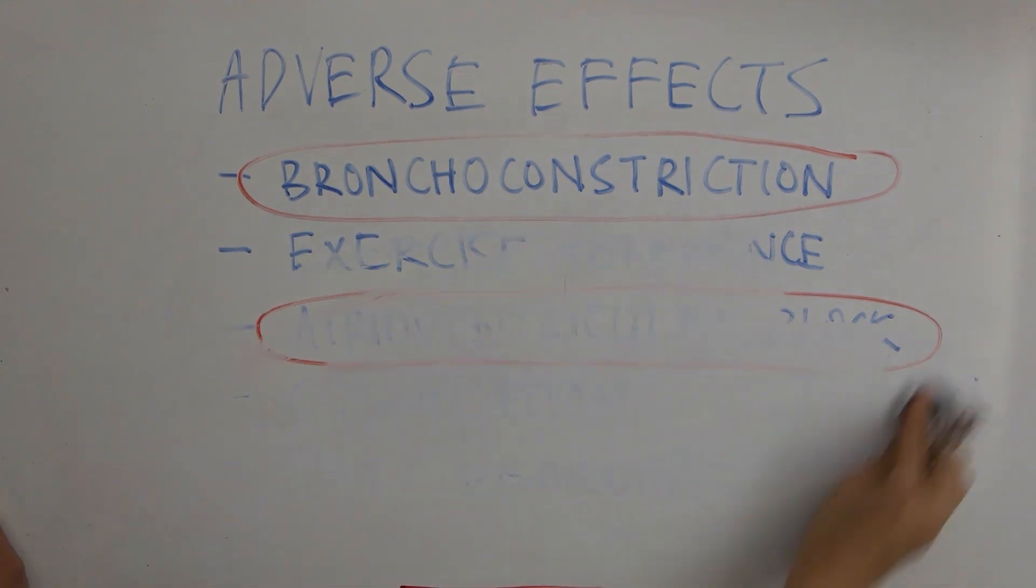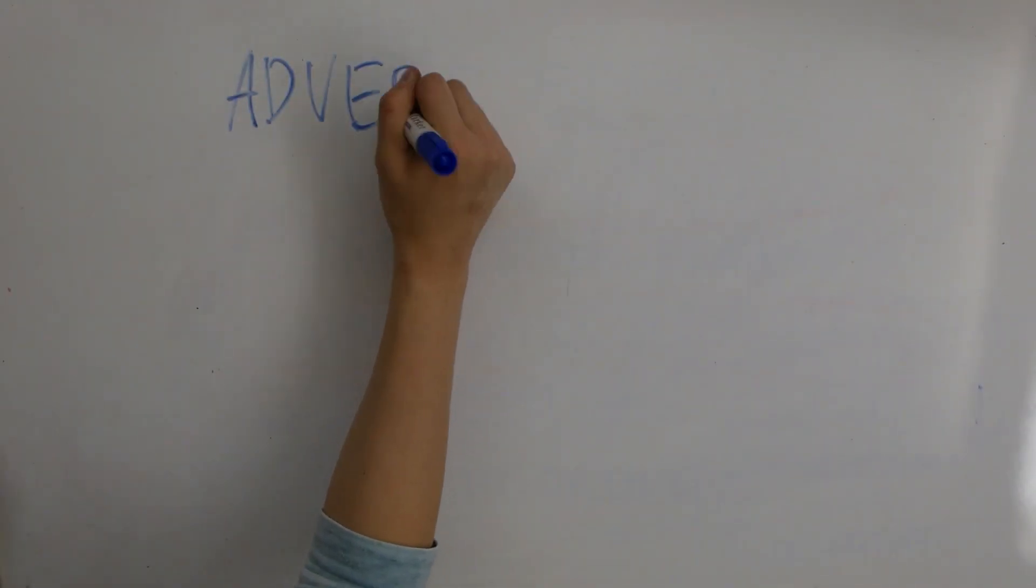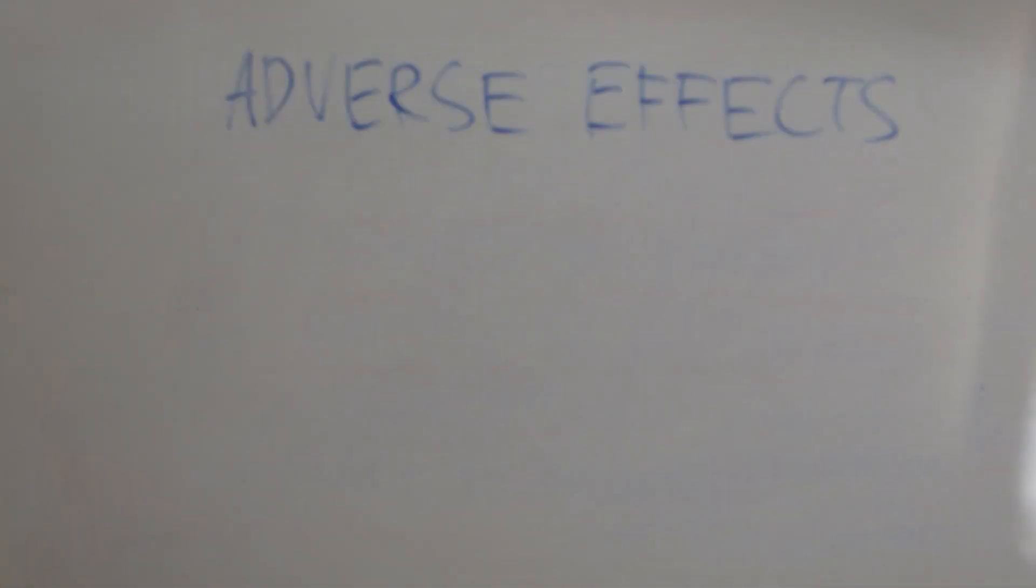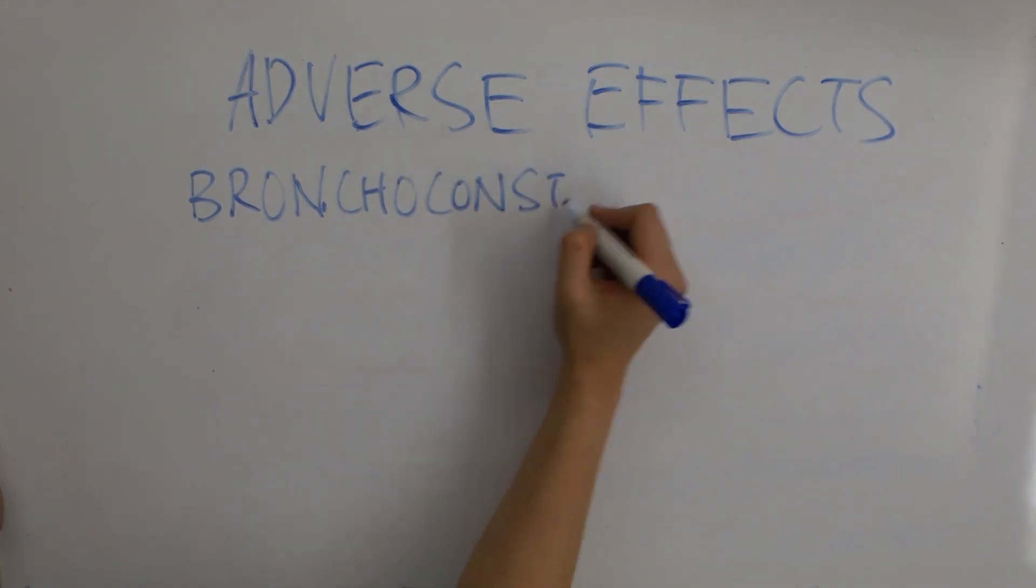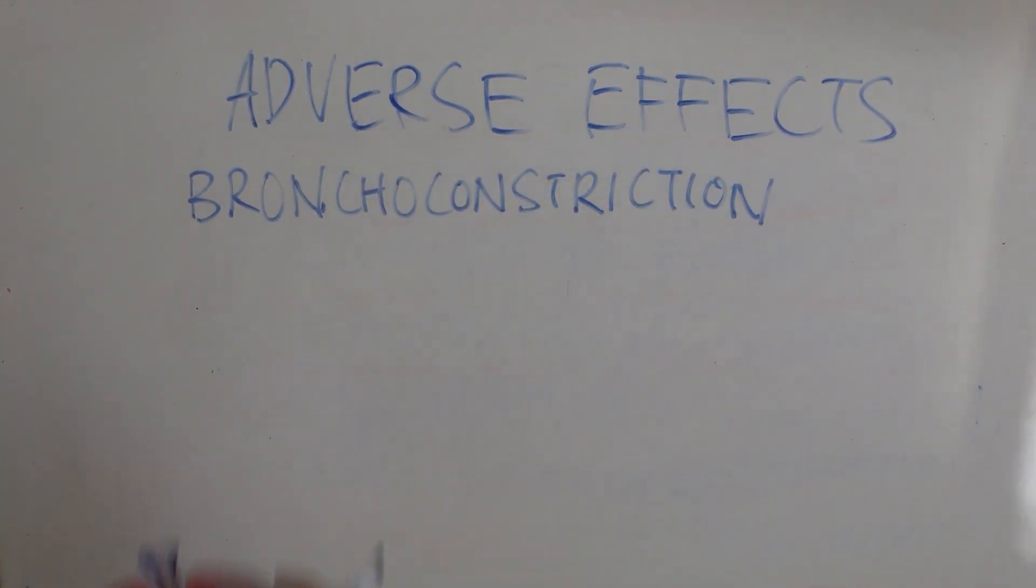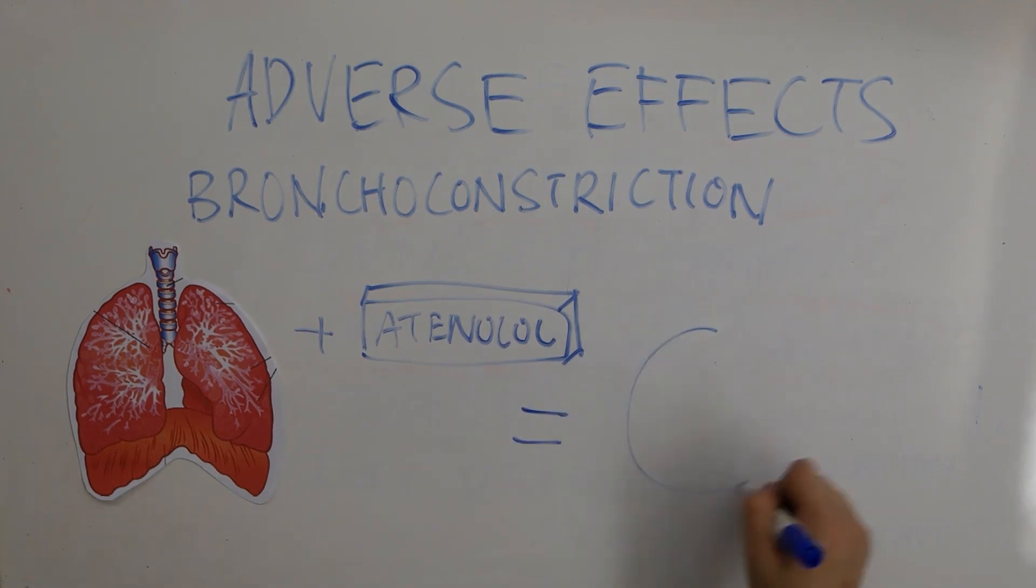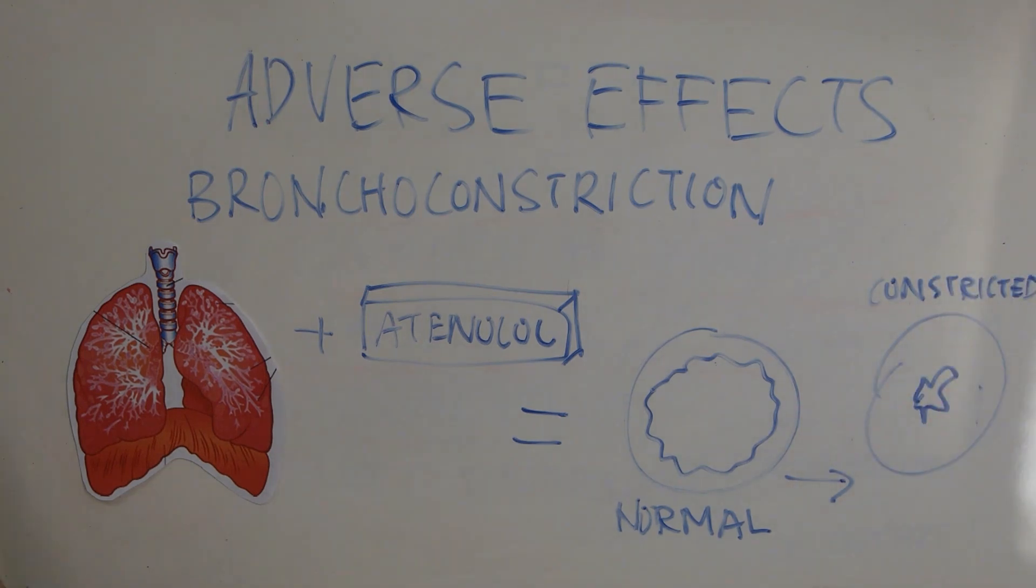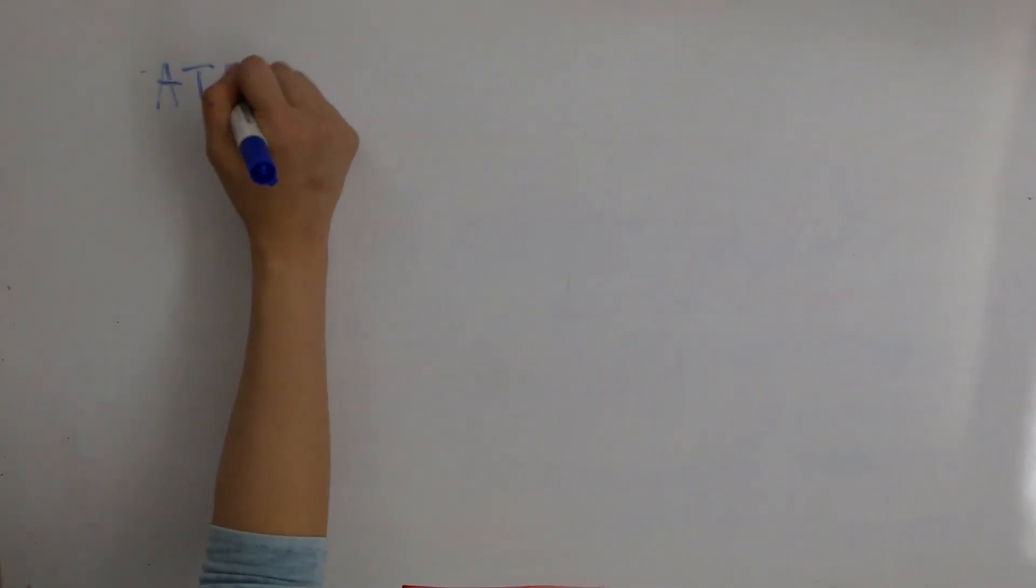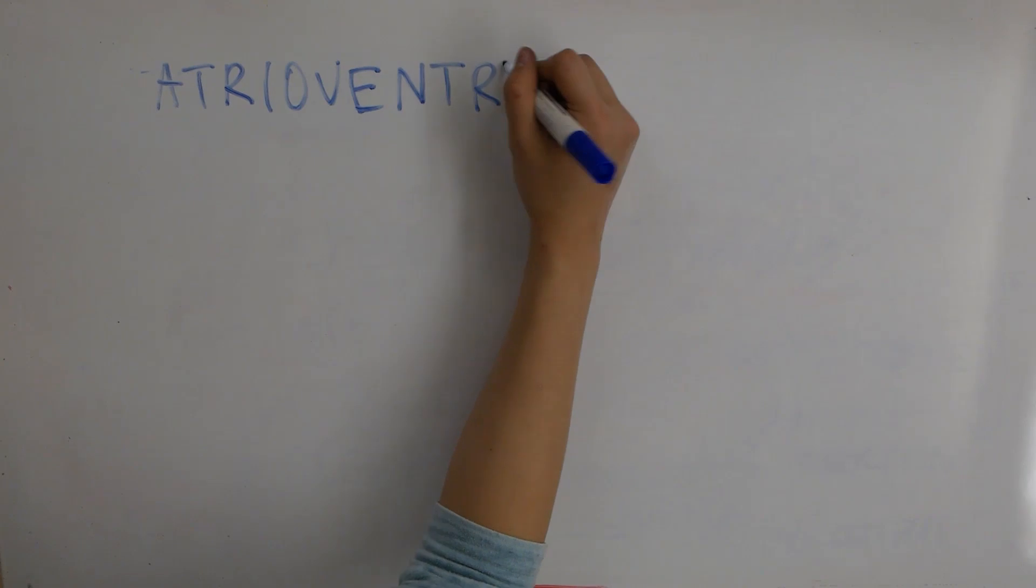Beta 2 receptors are also present in the lungs and can cause vasodilation in the bronchial smooth muscle. Beta blockers, including those that are cardioselective, can all have an effect on these receptors, which may result in the prevention of vasodilatory effects, causing bronchoconstriction to occur. It is for this reason that beta blockers are not used in patients with asthma or any other respiratory disorder.